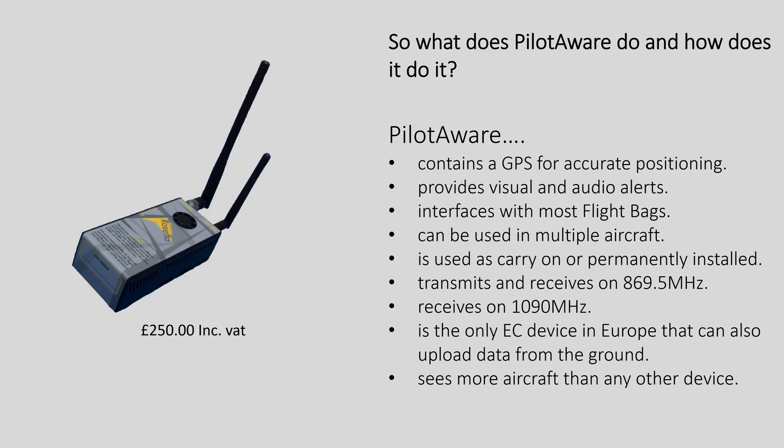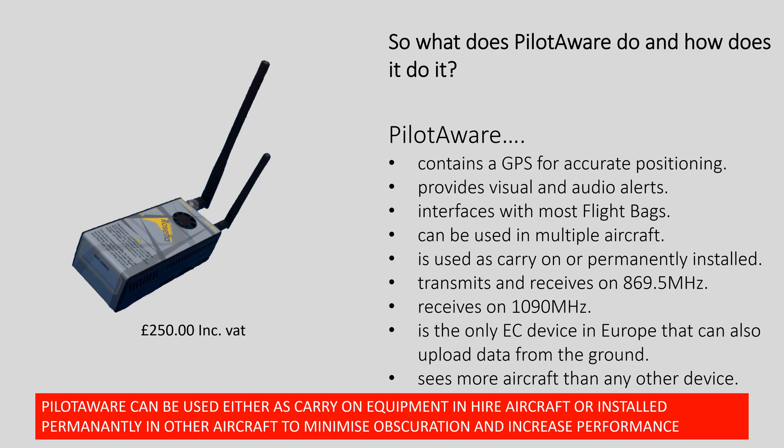As the various EC devices have been designed for different uses and operate on different frequencies, the trick is to get as much interoperability as possible. PilotAware has gone further than any other device to achieve this. Like all modern systems, PilotAware uses GPS for accurate positioning and also provides voice and audio alerts to the pilot through a tablet, screen or flight bag. Uniquely in Europe, PilotAware uses a ground station network to provide information on all those aircraft that it cannot see directly.